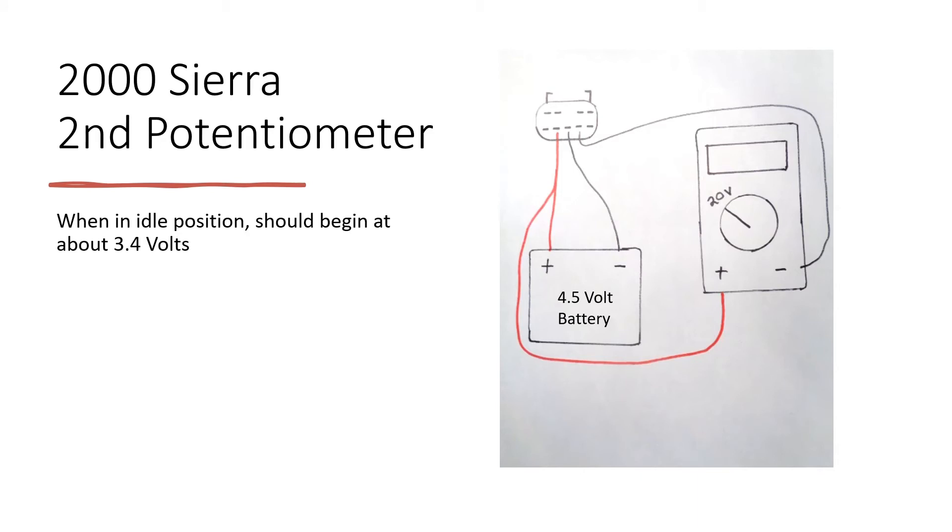After doing this, it should be reading again at about 3.4 volts. And after you twist it in, it should be reading about zero volts again. Remember to check for spikes and glitches during the test.